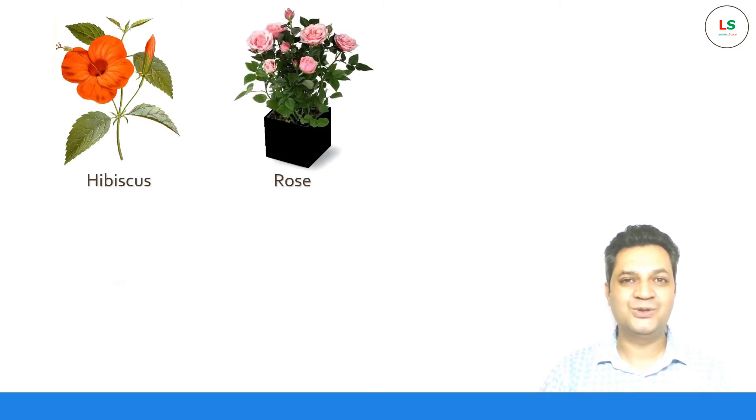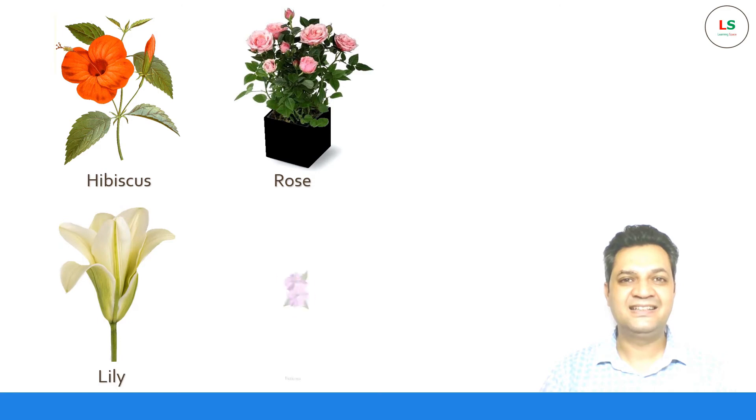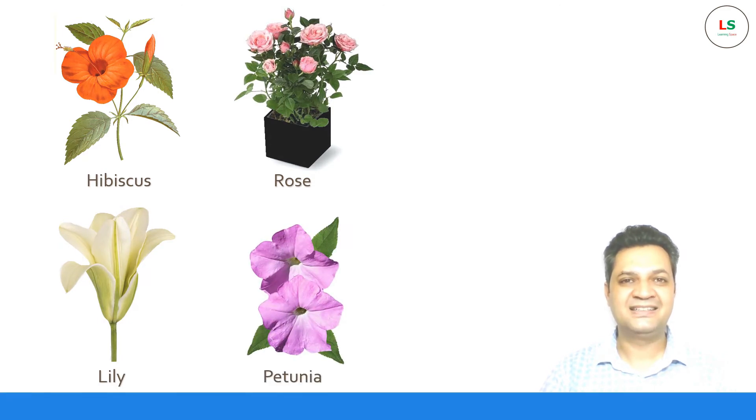Perfect flowers are the ones which have the male and the female parts. The pollens produced by the anther stick to the stigma, either by wind action or by honeybees and butterflies. Examples of perfect flowers are hibiscus, rose, lily, and petunia.